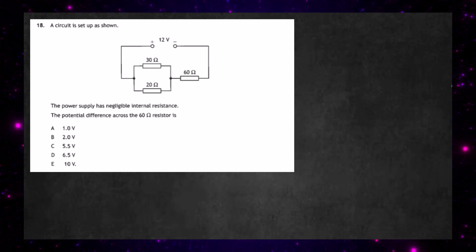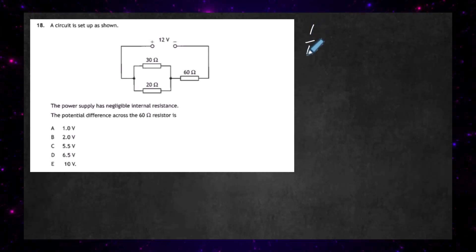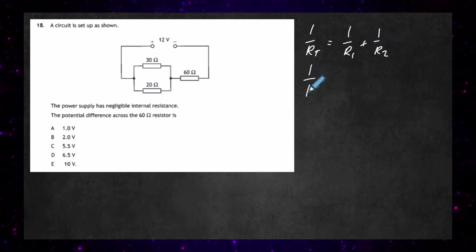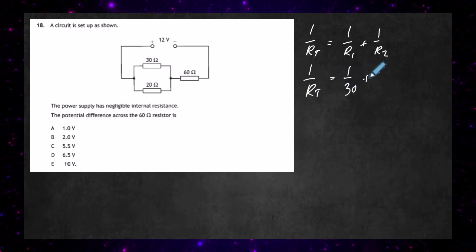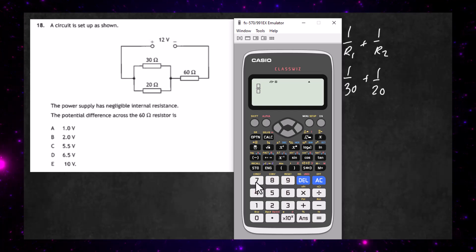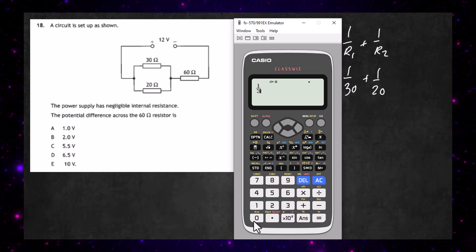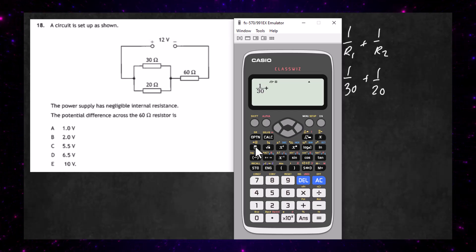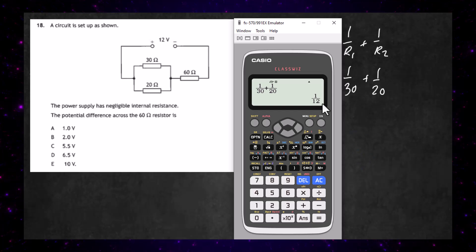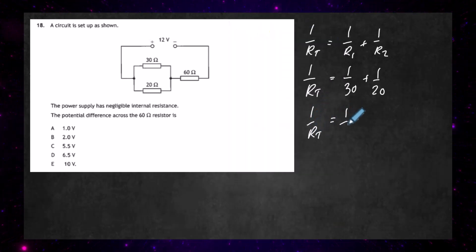First, we find the total resistance of the circuit by dealing with the parallel part first — the 30 Ω and 20 Ω resistors. Using the parallel resistance formula: 1/R_T = 1/R₁ + 1/R₂, so 1/R_T = 1/30 + 1/20. Using the calculator, we get 1/R_T = 1/12, which means the total resistance of the parallel combination equals 12 Ω.